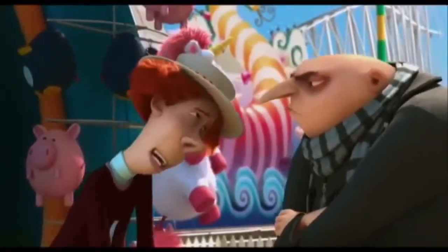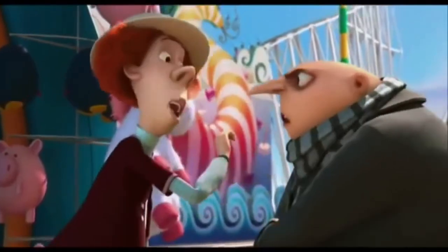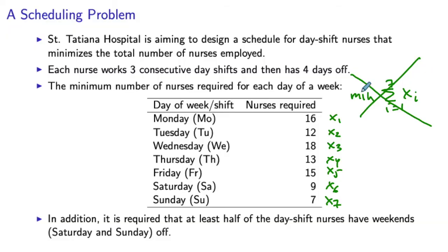So it looks like we need to rethink our definition of the decision variables. Looking at how nurse schedules are structured — three consecutive day shifts and then four consecutive days off — it makes sense to associate the decision variables with the different types of schedules rather than days of the week.